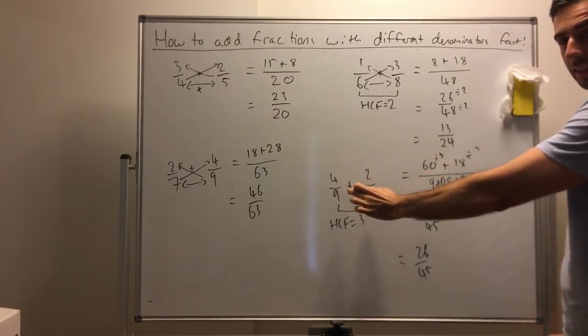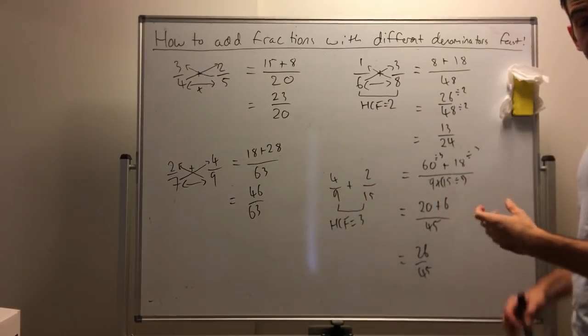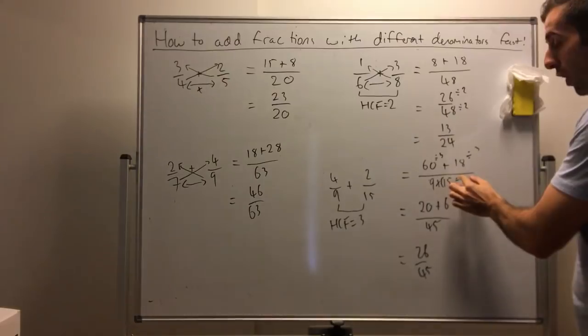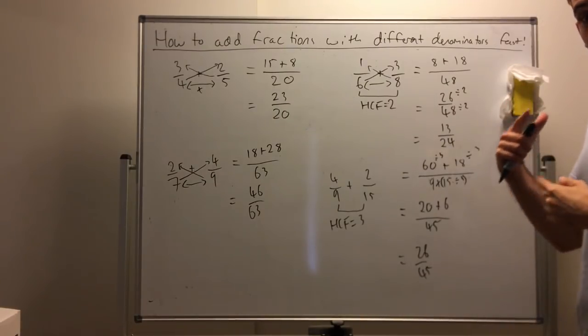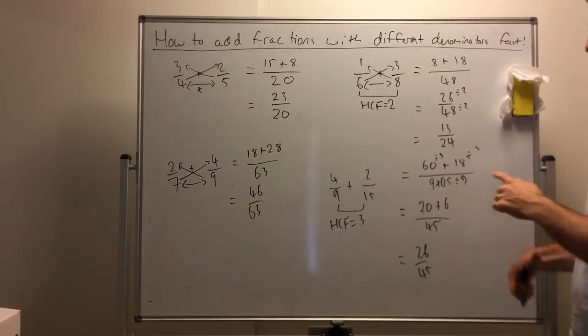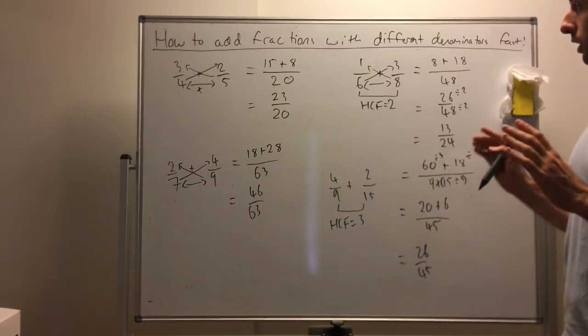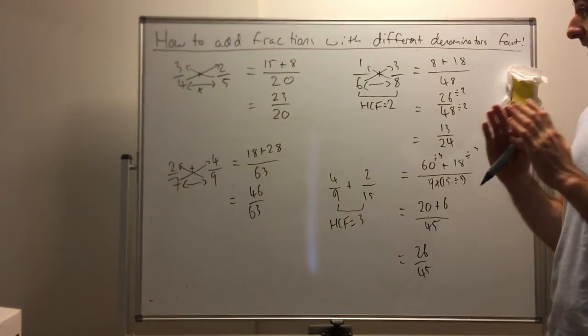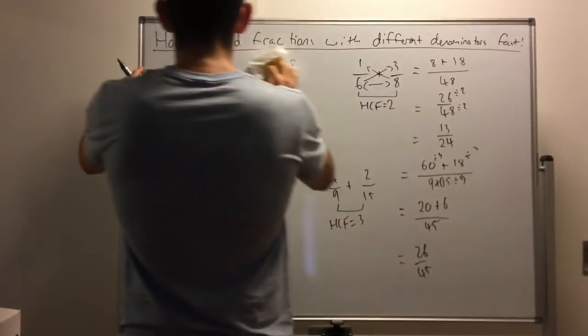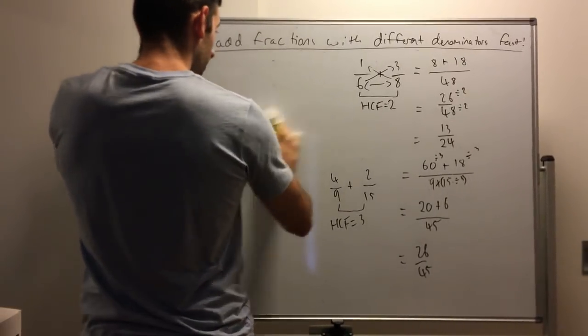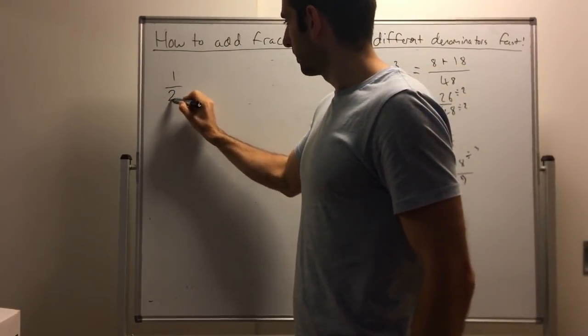This process, when the numbers are getting really high, is to divide out each term by the highest common factor. Even the denominator, don't even do the product. If you can't do that product straight away, write it down and then divide the higher number. Always divide the higher denominator by the highest common factor. It'll make this product much easier. I've shown you how to add fractions with different denominators fast. Let's step it up. Let's look at how to add three fractions with different denominators fast.